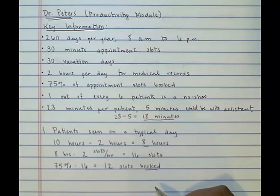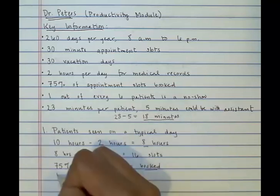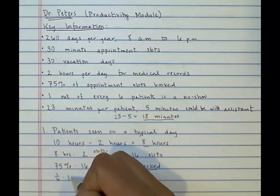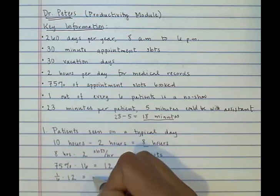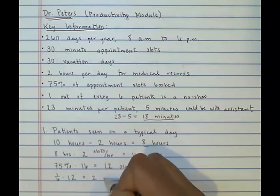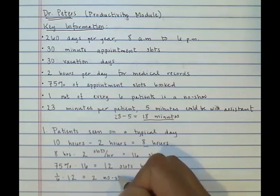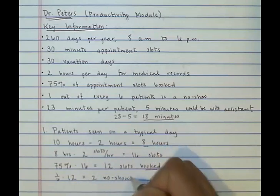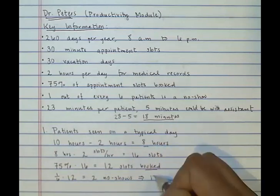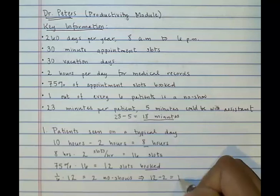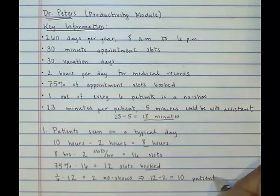Finally, 1 out of every 6 patients who book an appointment doesn't show up. 1 out of 6 times 12 equals 2, so that means Dr. Peters has 2 no-shows per day. 12 minus 2 is 10, which means Dr. Peters sees 10 patients each day.